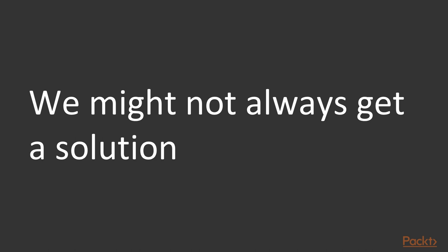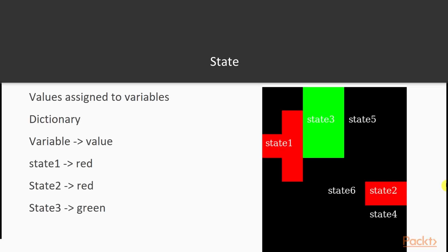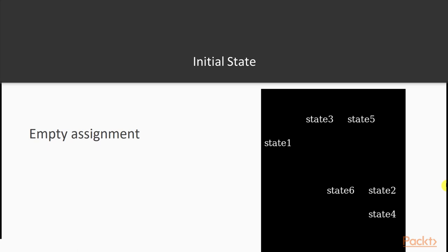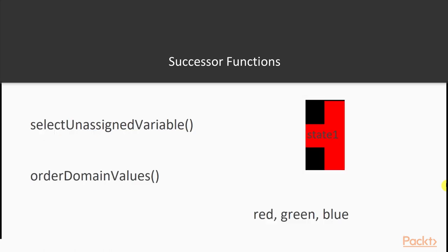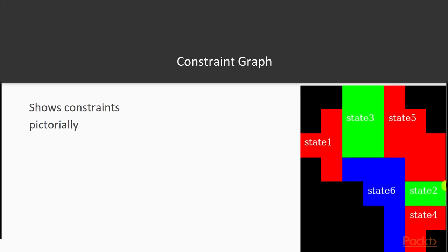So it's possible that while searching with constraints, we might not always get a solution. State is where the search process is at, so we define a state for the constraint satisfaction problem. To formulate the search problem, we define the three main ingredients: initial state, successor function, and goal function. Then we learn how to represent constraints pictorially using a constraint graph.